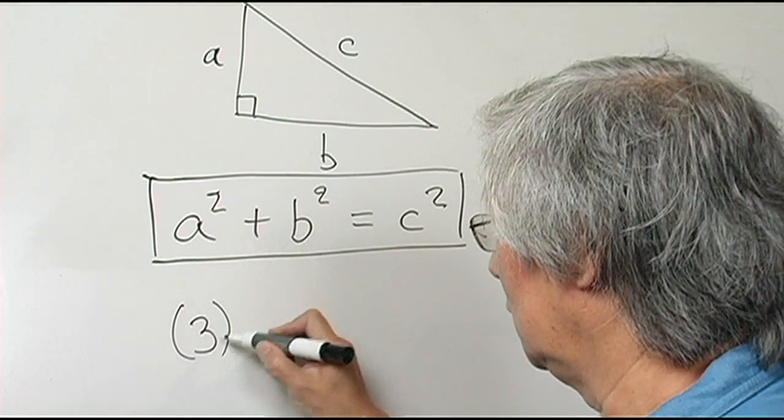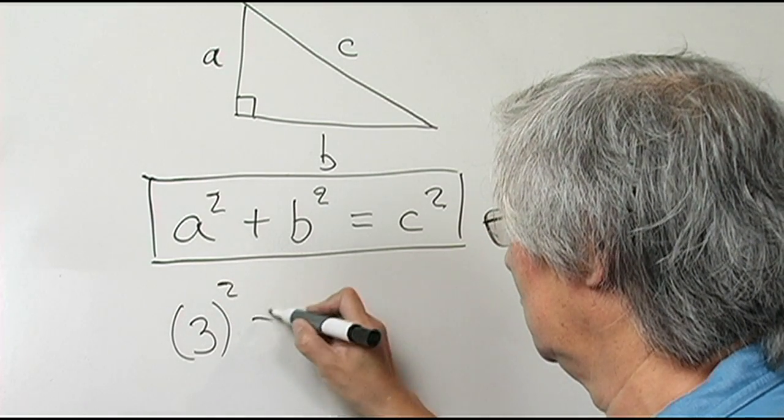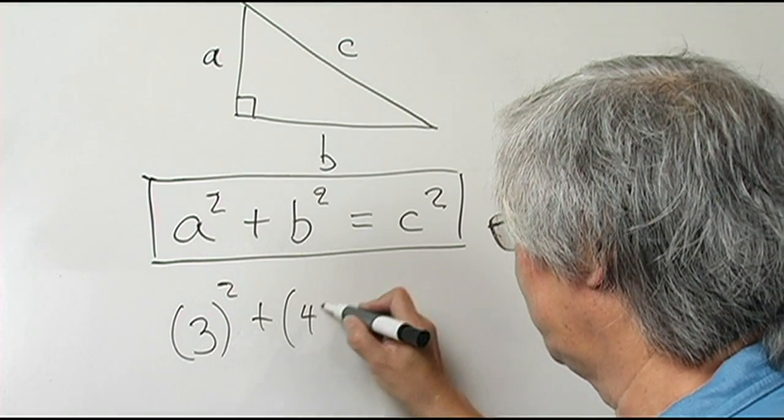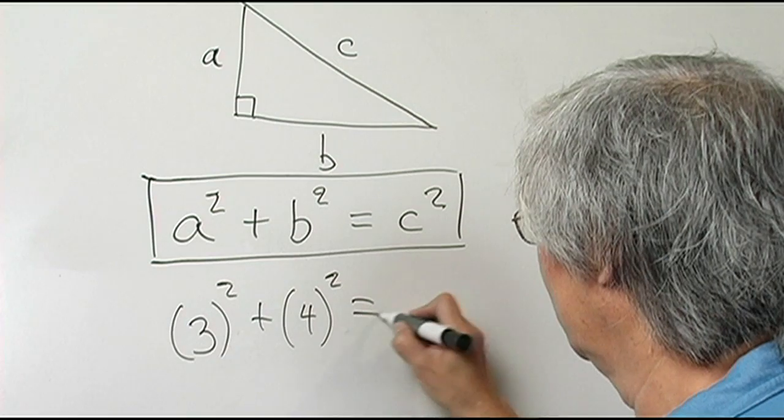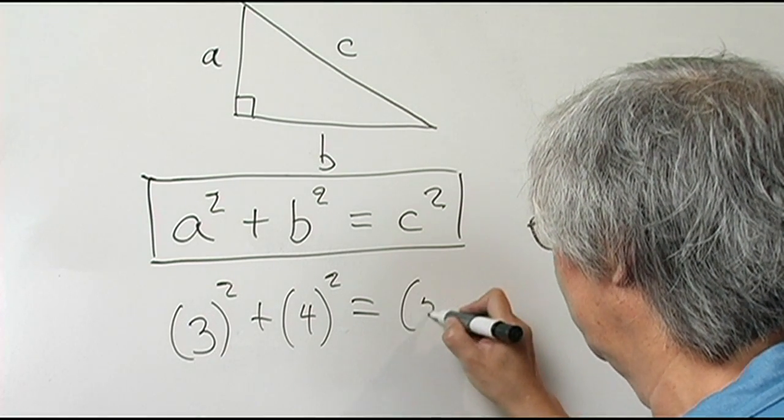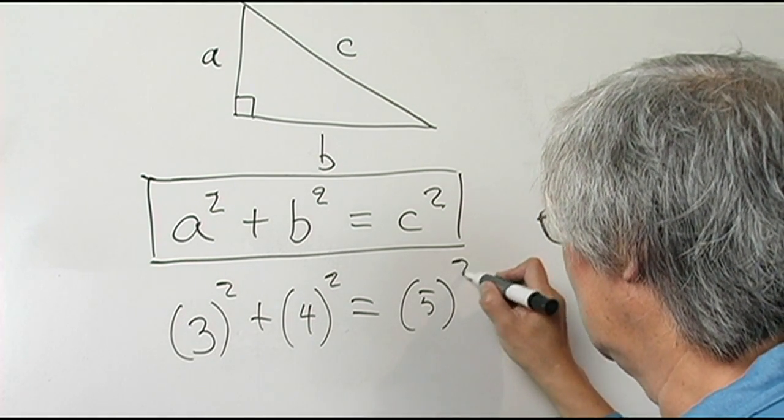So let's say A equals 3, B equals 4, and C equals 5. Let's see if it's true.